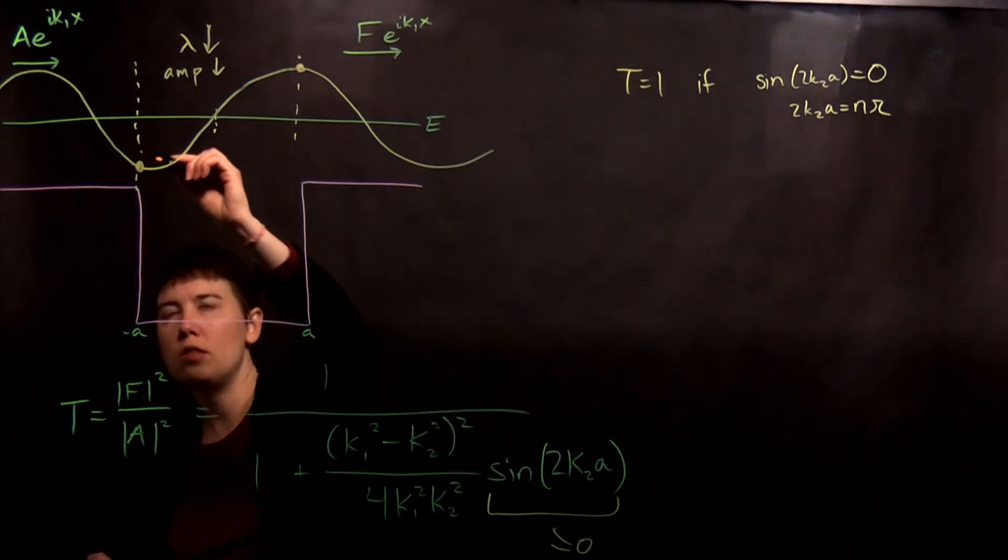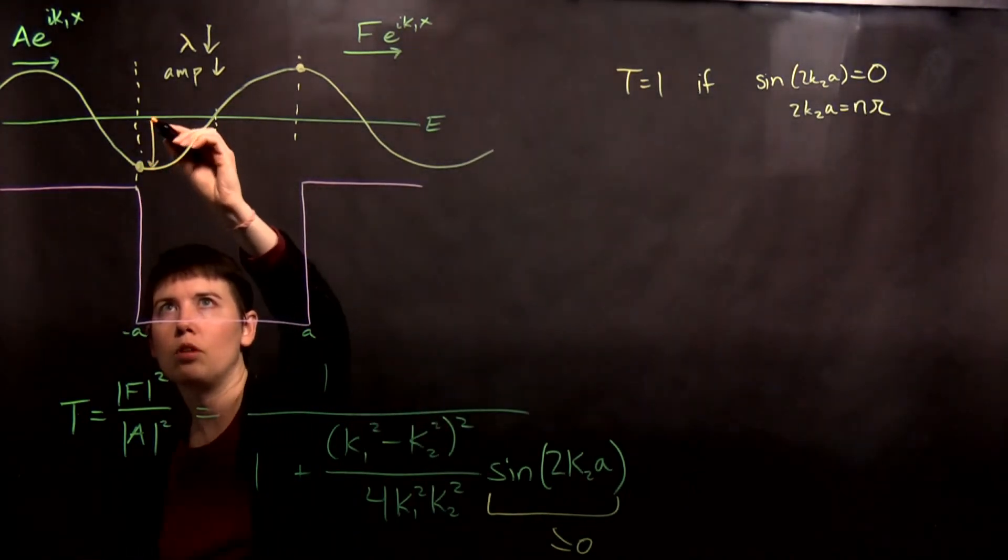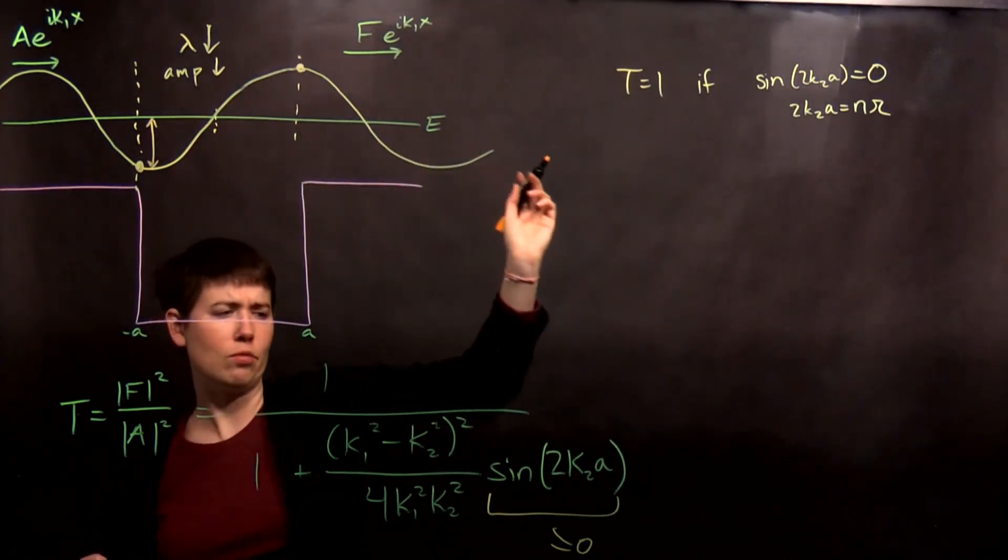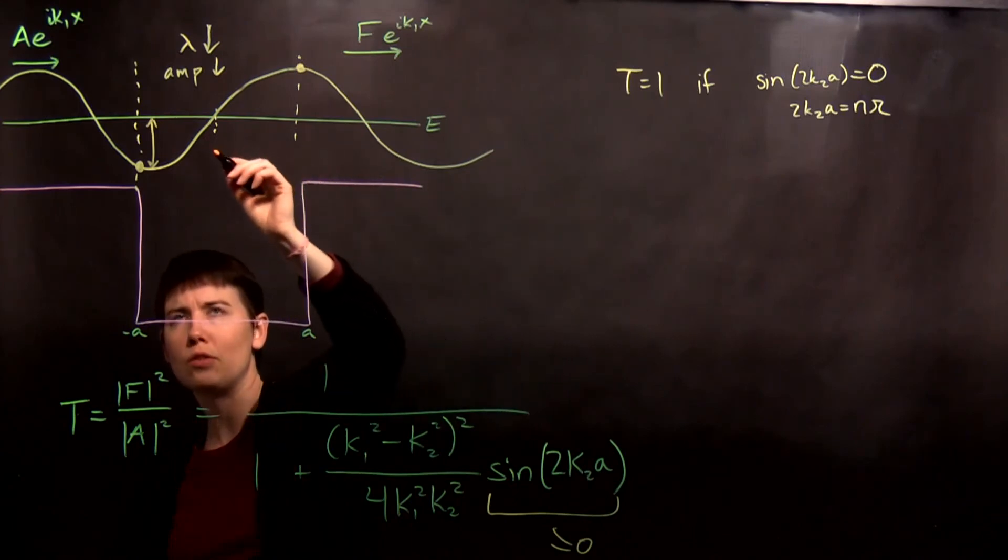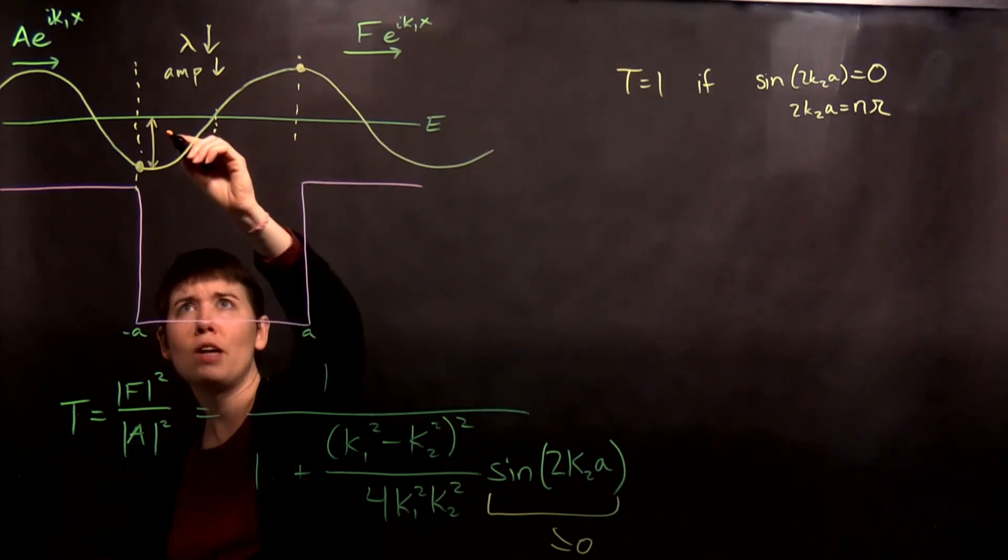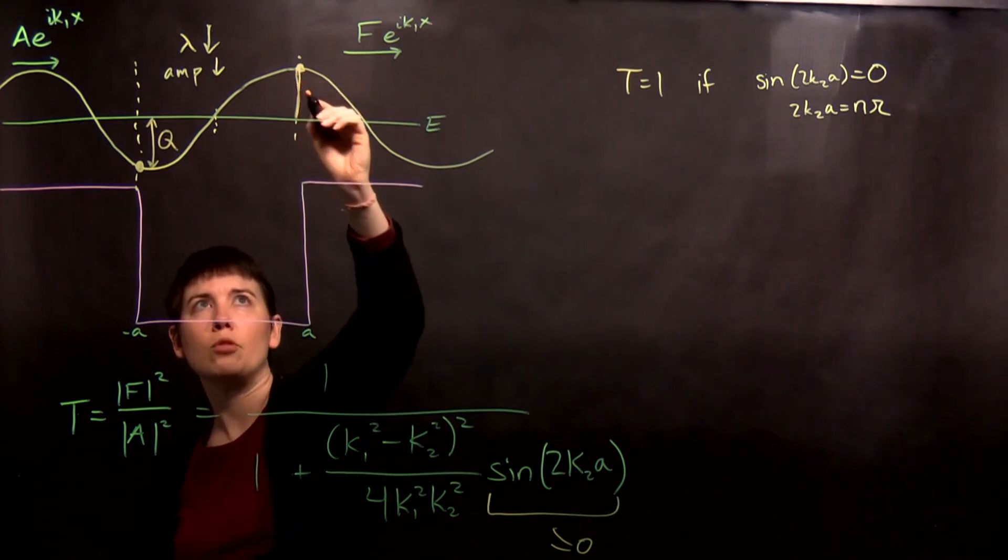So what that means is if this was at, we'll call it, I don't want to reuse a letter. There's too many letters. Let's call this Q, capital Q, that this is also at capital Q. And you could imagine scenarios where it keeps the same sign.